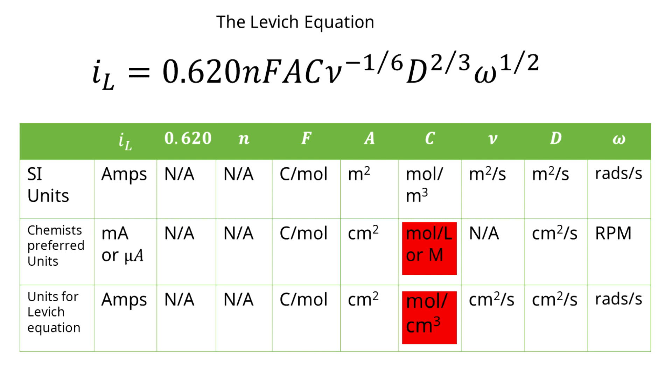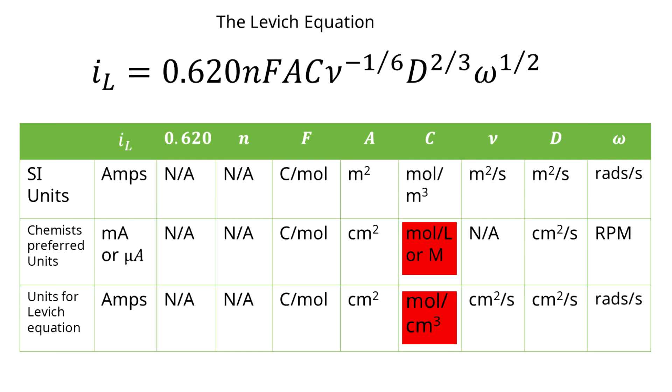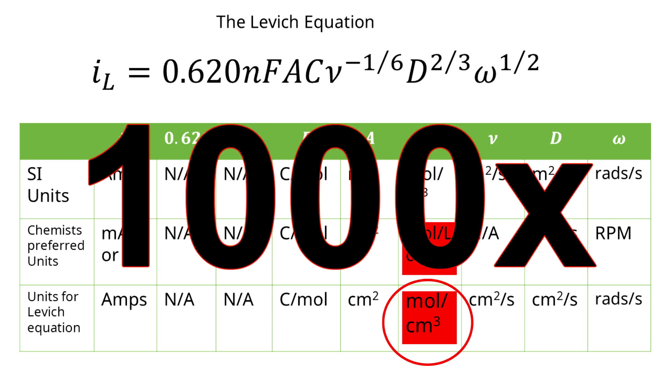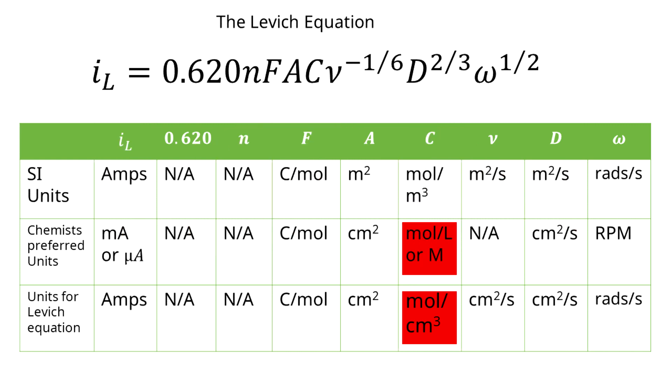Second, and perhaps my most frustrating one is concentration. Chemists tend to think in terms of molarity, which is moles per liter. However, the units of concentration in the Levich equation are moles per cubic centimeter. This represents a factor of 1000 difference, and I've messed up plenty of diffusion coefficient calculations because of it.